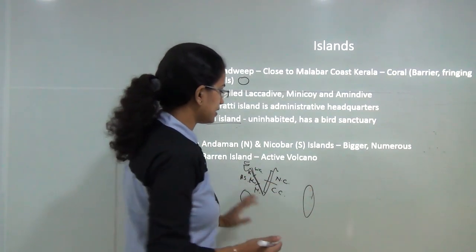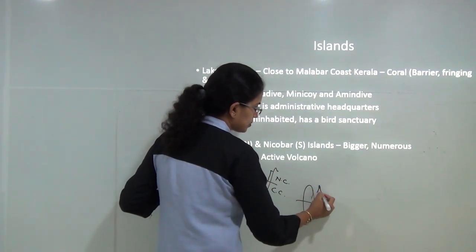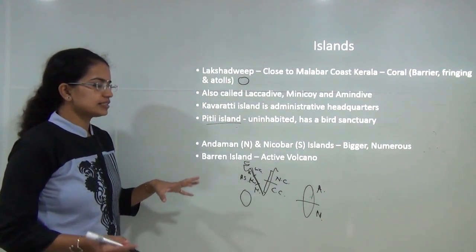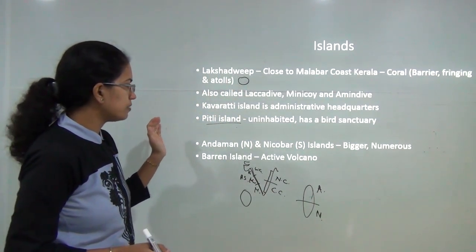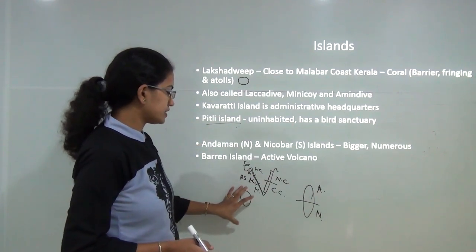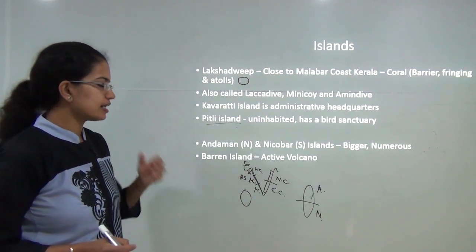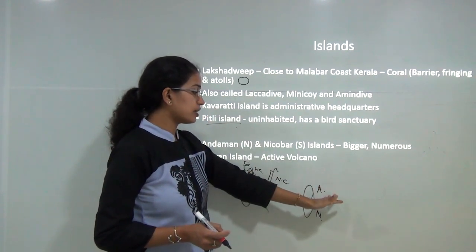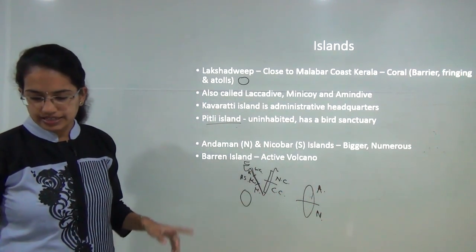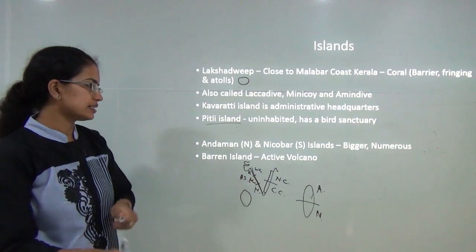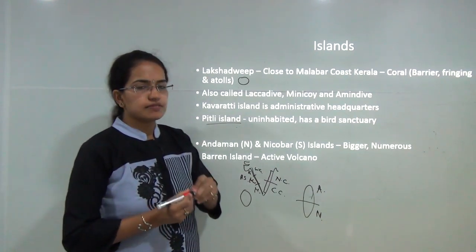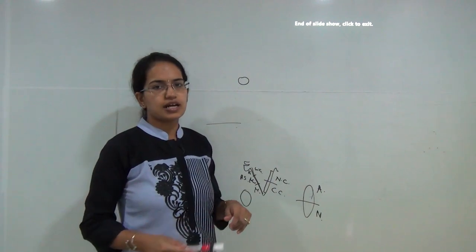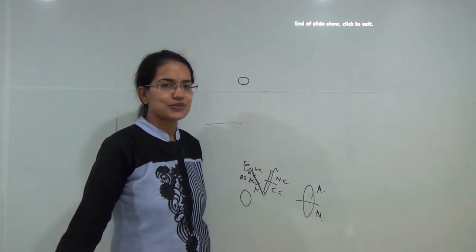The second island group is the Andaman and Nicobar Islands. The northern portion is the Andaman and the southern portion is the Nicobar islands. These are much bigger and more numerous compared to Lakshadweep. One of the unique features is Barren Island — the only active volcano that exists in India, found in the Andaman and Nicobar region. With this we cover the physical features of India. Drainage will be covered in the next class.